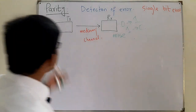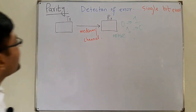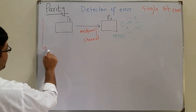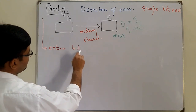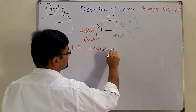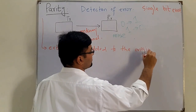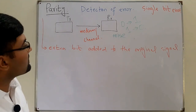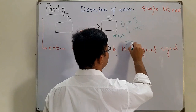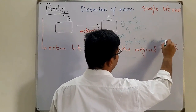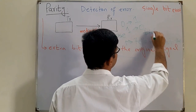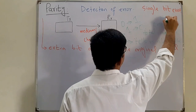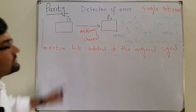We have methods to deal with this — we are dealing with parity. Parity is just an extra bit added to the original signal. This extra bit tells us about the total number of ones in the signal.